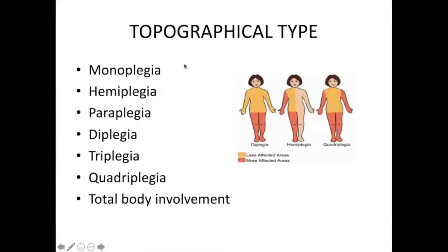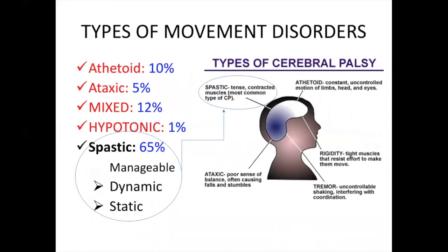The topographical types are monoplegia, hemiplegia, paraplegia, triplegia, diplegia, quadriplegia, and total body involvement. The most effective treatment outcomes are in monoplegia, followed by hemiplegia, then diplegia. We also assess if there is athetoid, ataxia, mixed, or hypotonic disorder. The most important type is spastic diplegia — it is 65% of all cerebral palsies and the most manageable.